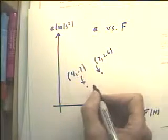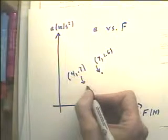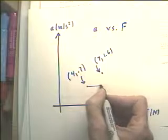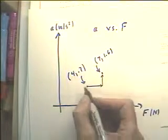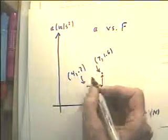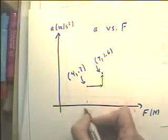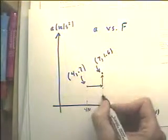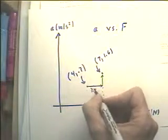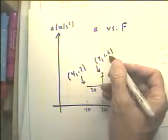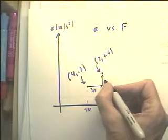Well, the run is here, the rise is here. The run goes from four newtons to seven newtons, so the run is three newtons. The rise goes from 0.7 meters per second squared to 1.6 meters per second squared.